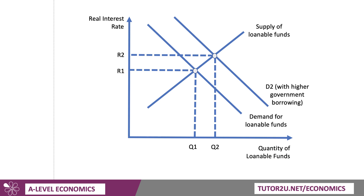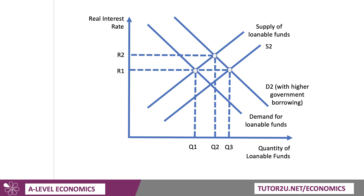Going back to our original diagram: there's the rise in government borrowing causing interest rates to go up. But if there's an outward shift in the supply of loanable funds, S2 becomes the new curve. The equilibrium with D2 means that if growth drives even higher savings at each rate of interest, the new curve S2 meets D2 at R1 — and there's not necessarily that increase in interest rates you would expect. This is a really good evaluation development of the diagram to address crowding out.